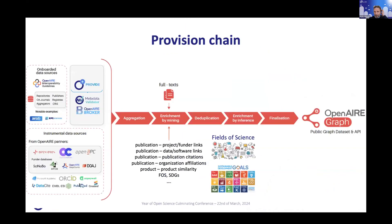How do we build this? It's a big-data infrastructure. We collect from validated data sources. Many of these are compliant to the guidelines we provide — instructions on how to expose metadata. Many repository platforms have embedded these guidelines, so if you use DSpace, Dataverse, or EPrints, you're already compliant with OpenAIRE Graph and European guidelines. Other sources are instrumental — key sources like Crossref, DataCite, OpenCitations, and many others — which may not be compliant but are important.